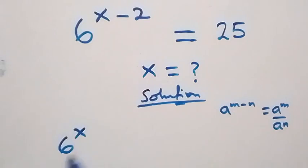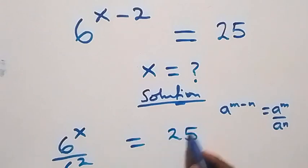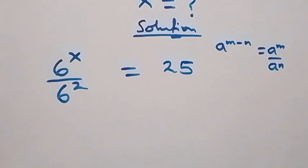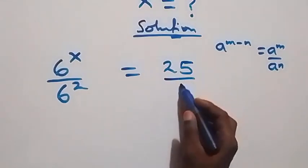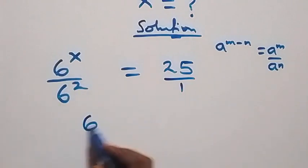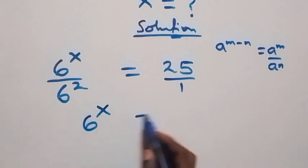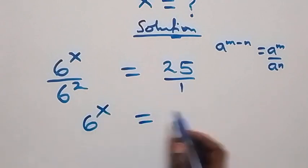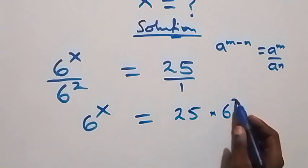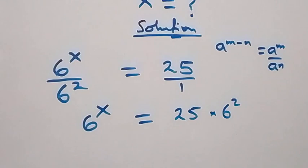We rewrite the left side as 6 raised to power x over 6 squared, and this equals 25 on the right side. This gives us 25 over 1. Cross-multiplying, 6 raised to power x times 1 gives us 6 raised to power x equals 25 times 6 squared.